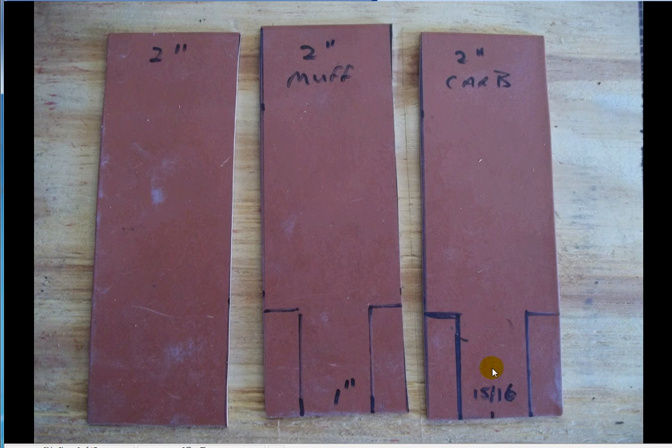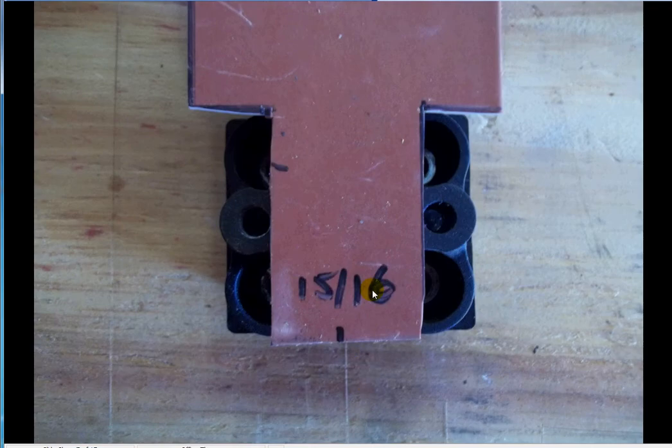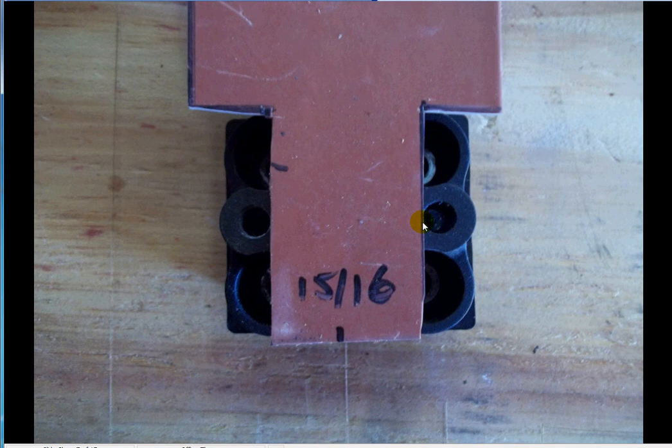The carburetor's width is 15/16 of an inch. The muffler is 1 inch. I'm going to show you how I got these measurements. Here you can see I've taken an isolator block and measured the distance between the two holes for the screws. I then cut my block off plate to that width.